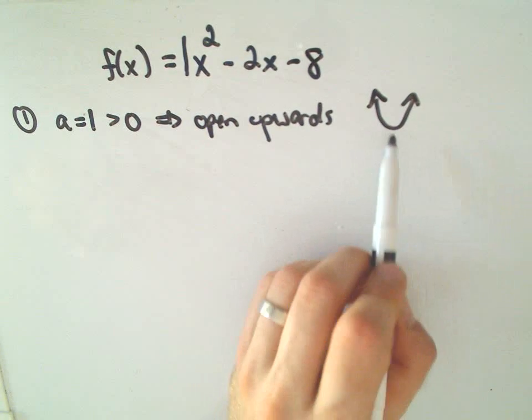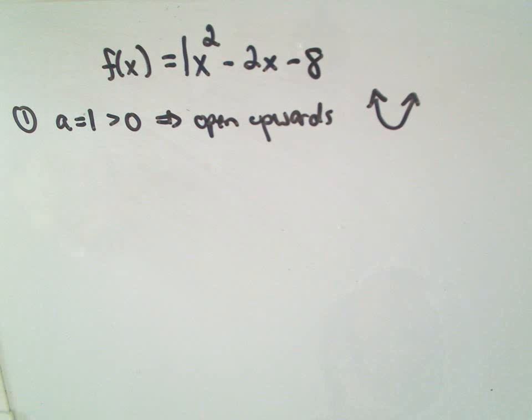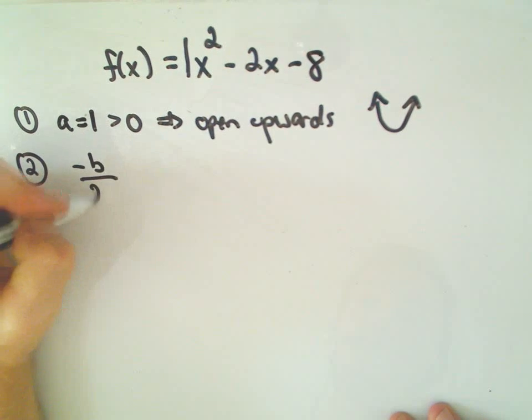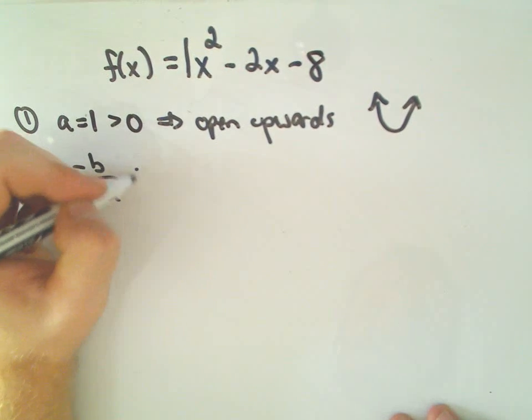Okay, so if it opens upwards, I know there's going to be a lowest point on my parabola. The second thing I'm going to do, you don't have to do this in any particular order, I'm going to find the vertex using the negative b over 2a formula.